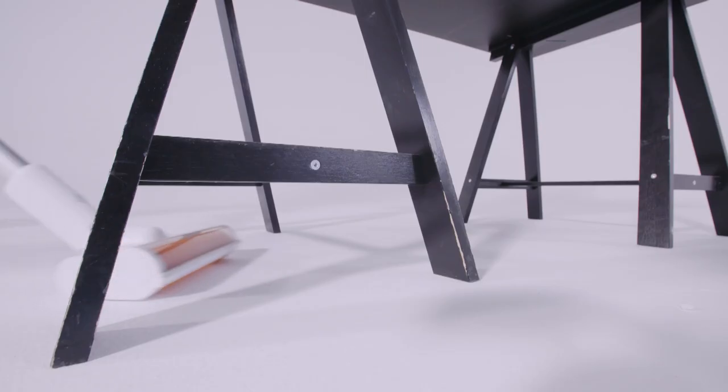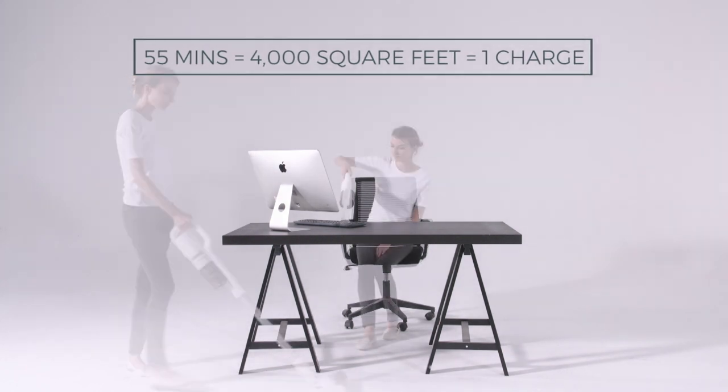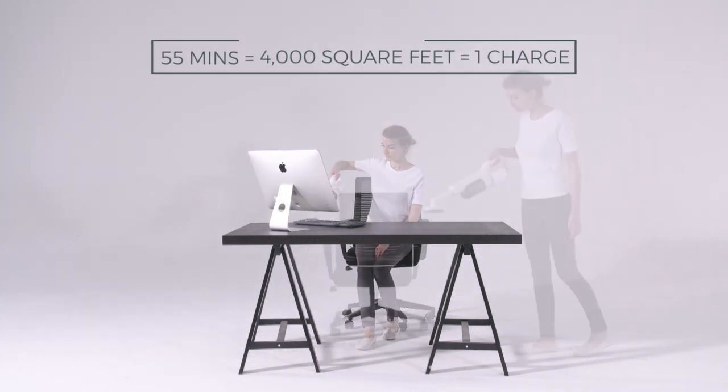With three power modes, the F8 can clean up to 55 minutes and as much as 4,000 square feet without charging with enough operating power to clean all around your home.